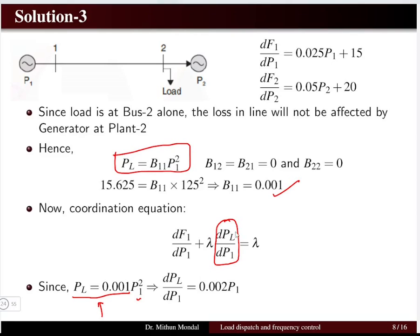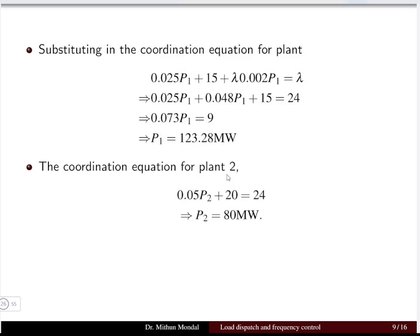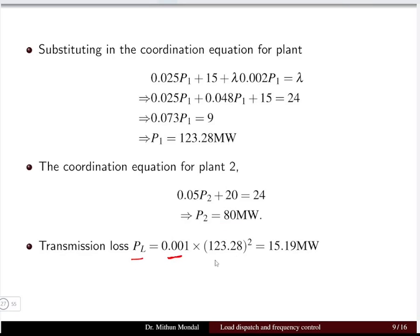Using the coordination equation with the given incremental cost dF1/dP1 and lambda = 24, we solve for P1 and get 123.28 MW. Similarly, applying the coordination equation for plant 2, we find P2 = 80 MW. The power loss equals B11 × P1² = 15.19 MW.